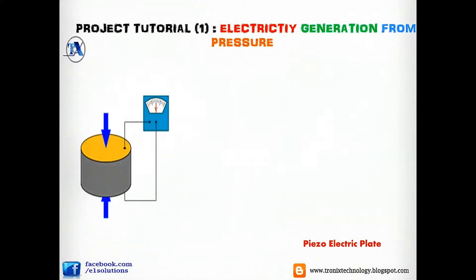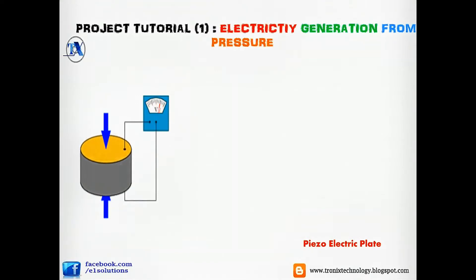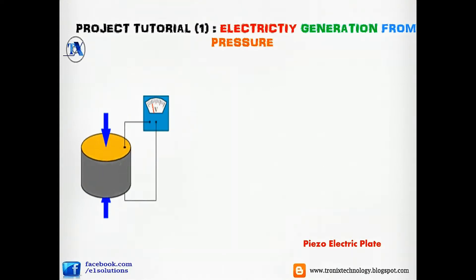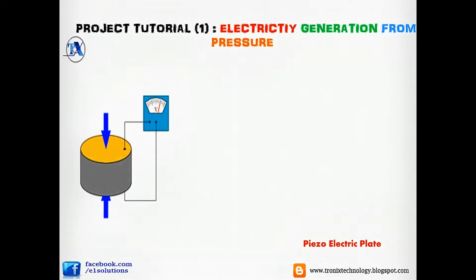Now we come to the main point: how we are going to generate electricity from pressure. The basic principle element of our project is a piezoelectric plate. A piezoelectric plate is a material that generates electrical energy when we put pressure on it. As you can see in this video, when we deform this piezoelectric plate, the voltmeter deflects from positive to negative half cycle, meaning it is generating AC voltage.